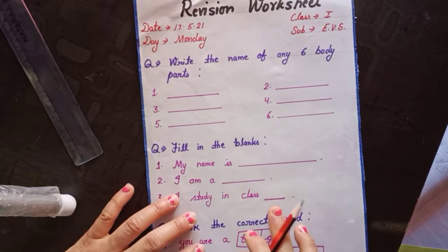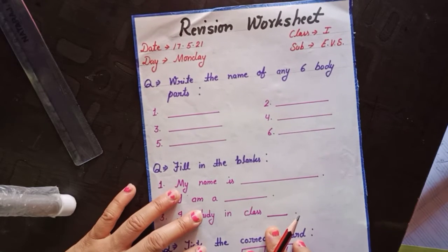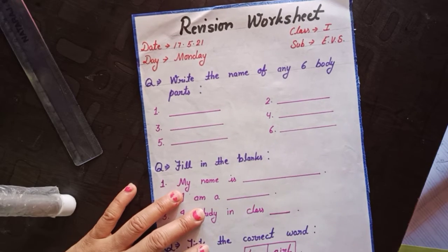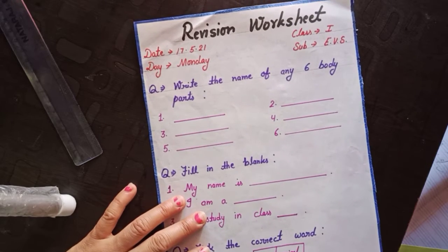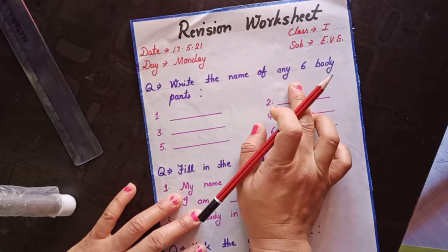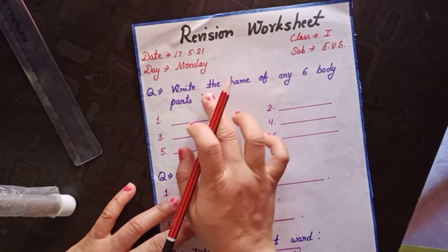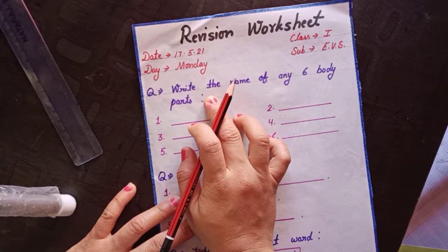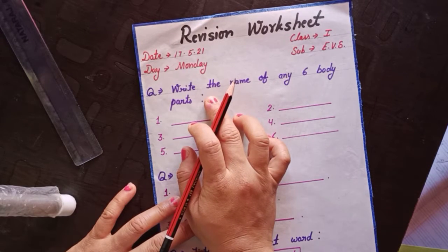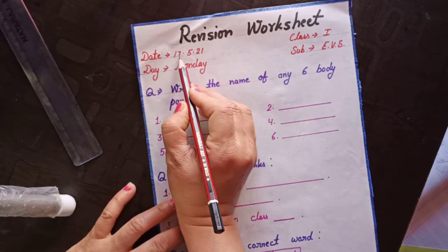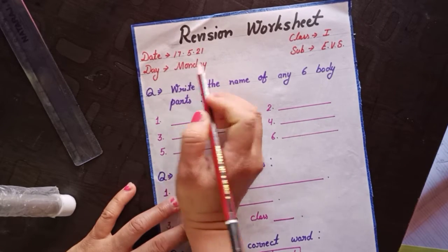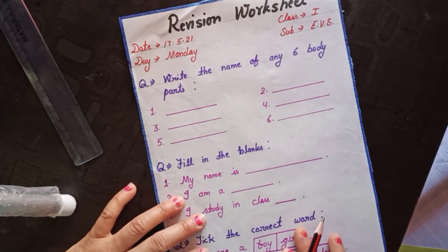Firstly, you have to note down this worksheet in your EVS notebook. You have to write in your EVS notebook in your revision worksheet. Note down with sketchpen. Questions and headings you have to write with sketchpen. Alright? Date: 17, 5, 21. Day: Monday. Alright? So let's start.